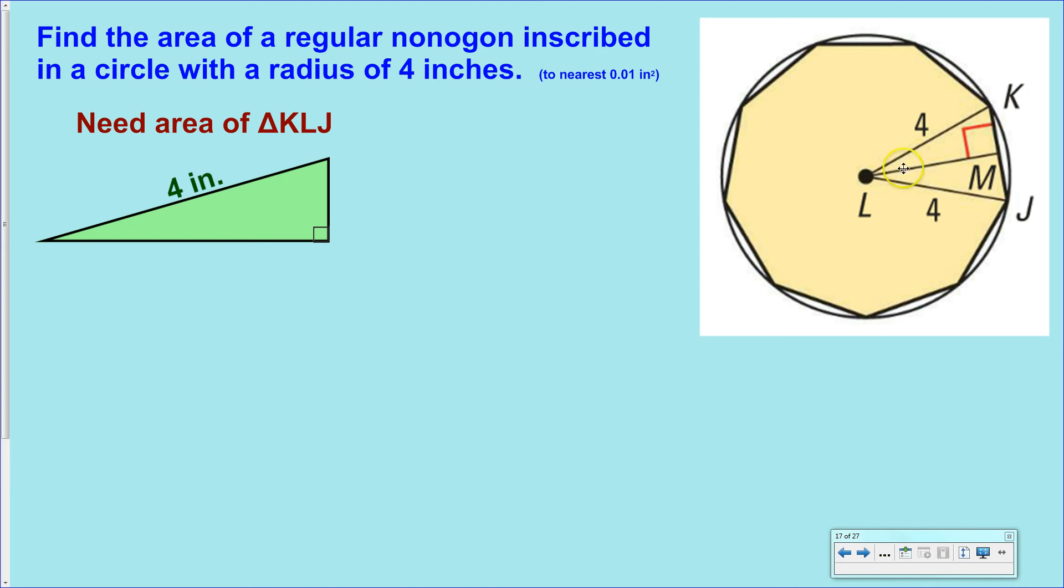So, this triangle KLJ contains one-ninth of a circle in terms of its degrees here. And triangle KLM, because it's half of that little triangle, will contain one-eighteenth of a circle. Okay, so all we're going to do is we're going to take 360 and divide by 18. And this 20 degrees, we can pop it right in there. And now, all of a sudden, we have two pieces of information within the triangle. And we can go ahead and solve it.